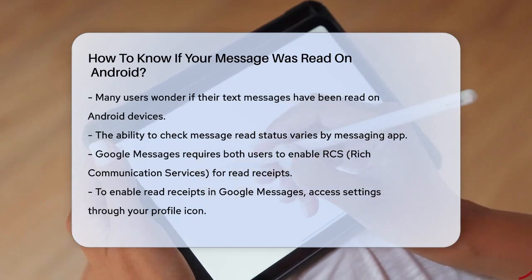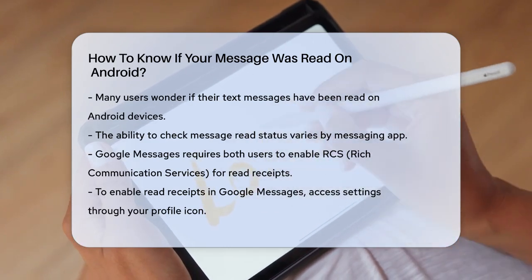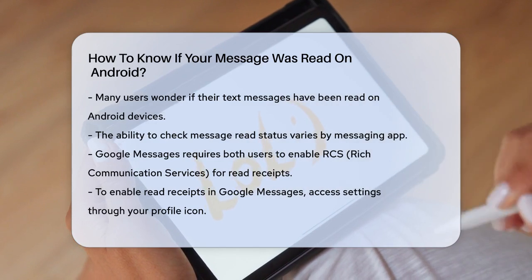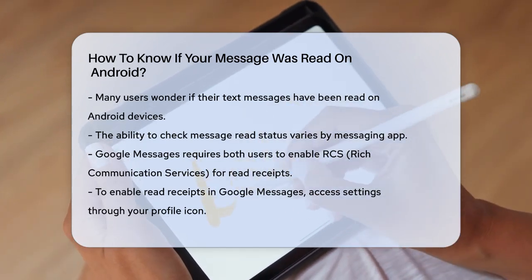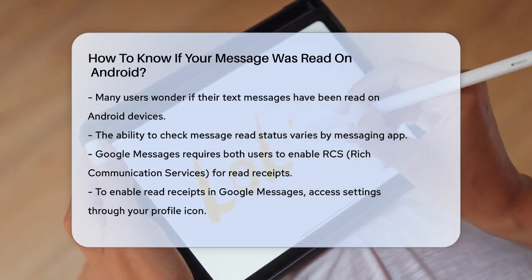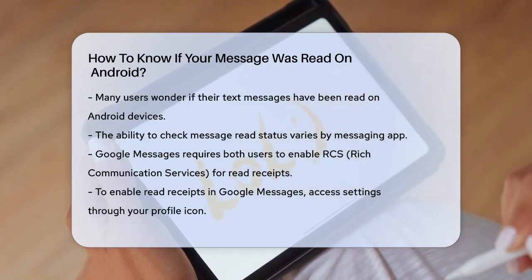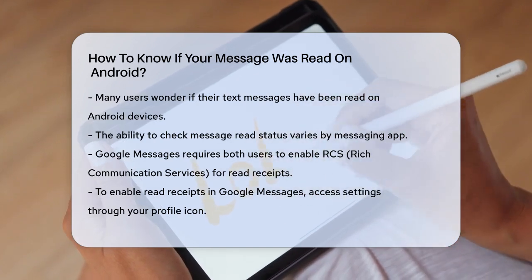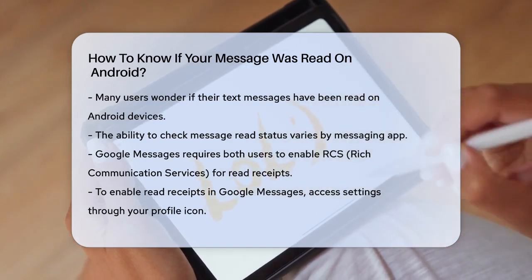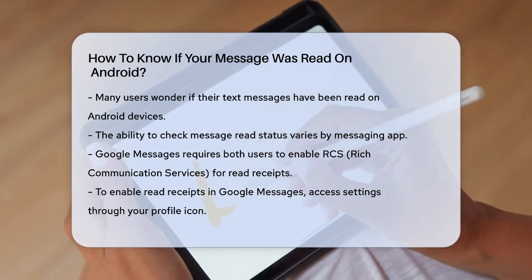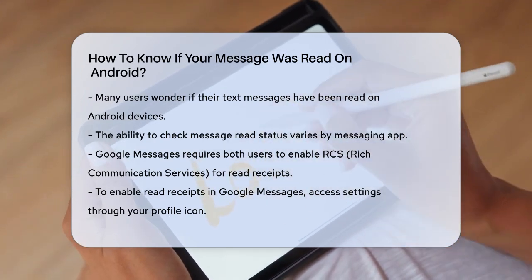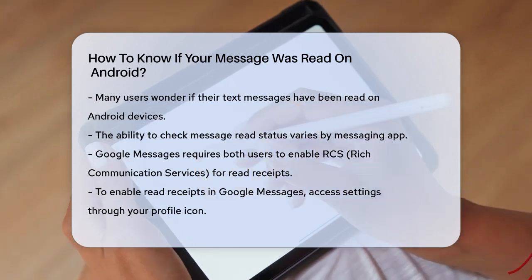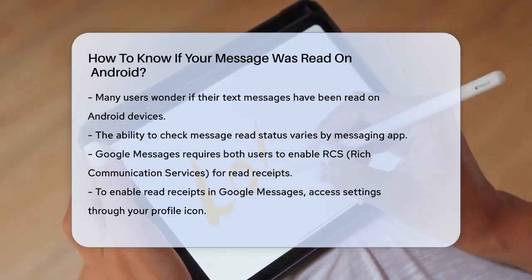First, the method you use depends on the messaging app you're using. Let's start with Google Messages, which is a popular choice for many Android users. To see if your message was read on Google Messages, you need to make sure that both you and the recipient are using RCS, Rich Communication Services, chats. RCS is a modern messaging standard that offers more features than traditional SMS. Here's how you enable read receipts on Google Messages.